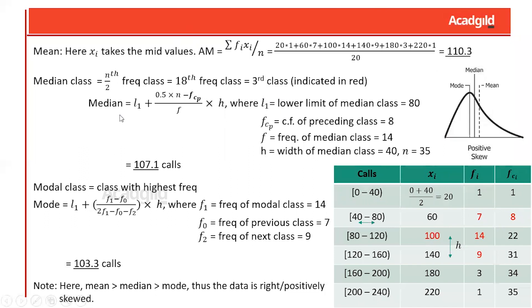The standard formula for calculating the median is: l1 is the lower limit of the median class, and fcp is the cumulative frequency of the previous class, which is 8. After calculations, the median is estimated to be around 107. For the modal class, the formula uses f1 as the frequency of the modal class and f0 as the frequency of the previous class — the mode is found to be 103. The modal class is the third class, which holds the maximum frequency of 14. In the mode formula, f1 is the modal class frequency, f0 is the previous class frequency, and f2 is the next class frequency.